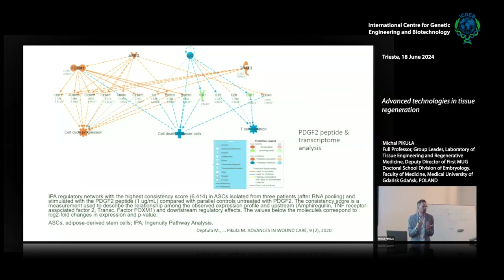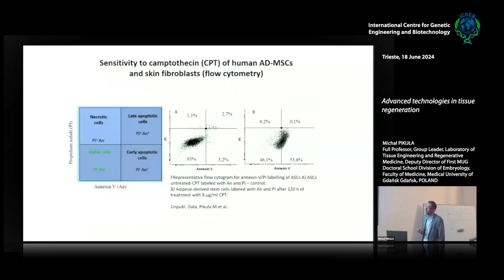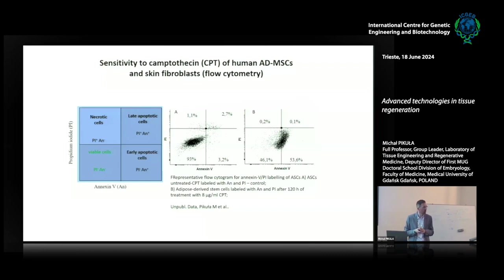This is one of our studies where we compare the differentiation potential and transcriptional profile of cells from plastic surgery and oncological surgery patients — and we haven't seen any differences, also when comparing flow cytometry markers and differentiation potential. We analyze these cells after stimulation with peptides and growth factors, then analyze what's happening with them. One of our peptides, which was based on PDGF, very nicely stimulated cell-cycle progression and all intracellular pathways responsible for proliferation. This is unpublished data. We also see that stem cells from fat tissue are very resistant to different factors, like cytotoxic drugs.